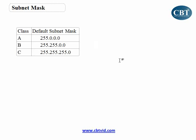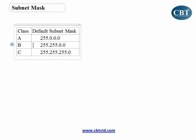What does that mean? Subnet mask has exactly the structure of an IP address. For example, here you can see 255.0.0.0 — same structure: four different octets separated by three dots, just like an IP address. Go to Class B, the subnet mask is 255.255.0.0. Go to Class C, it's 255.255.255.0.